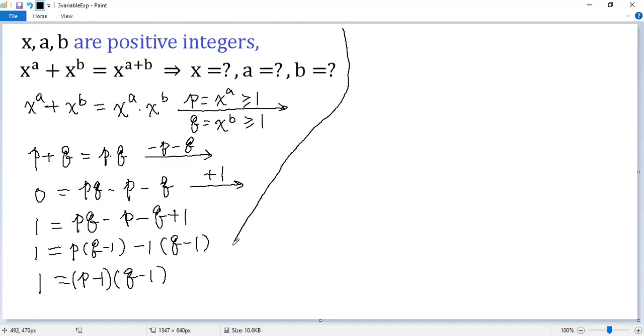We know p, q are positive integers. So p minus 1 should be non-negative. q minus 1 should also be non-negative and also integers. So the only possibility would be p minus 1, q minus 1 equals 1.